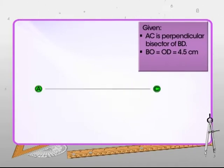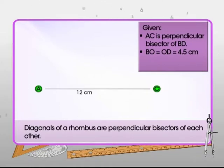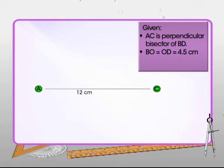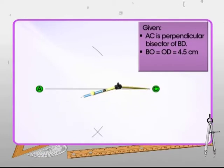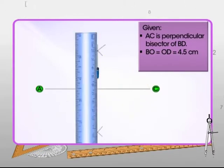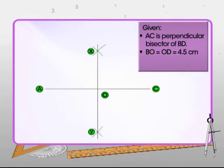Let's start with the construction now. Draw a line segment whose length is equal to one of the diagonals, say AC equal to 12 cm. The diagonals of a rhombus are perpendicular bisectors of each other. Thus, to locate the other diagonal BD, construct the perpendicular bisector of AC, that is XY, to intersect AC at O. Since AC is the perpendicular bisector of BD, point O is the midpoint of BD.